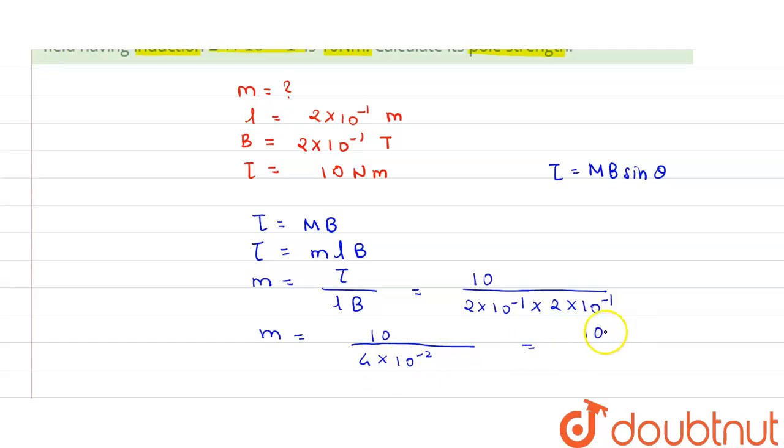Pole strength m will be equal to 10/(4 × 10⁻²). This 10⁻² when it goes in the numerator it will be +2, and +2 into 10 will be 10³, that is 1000/4.